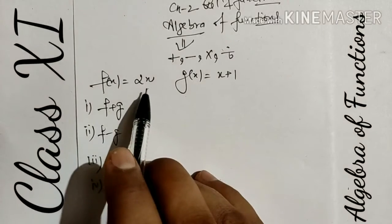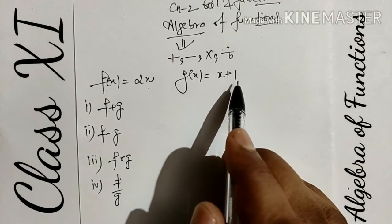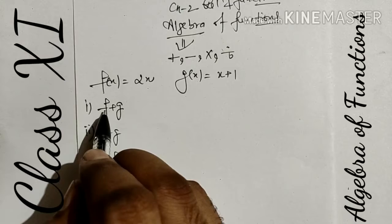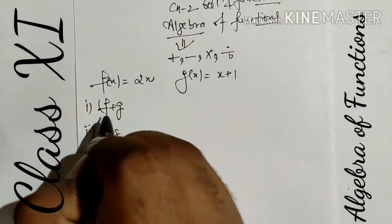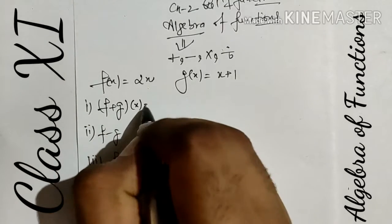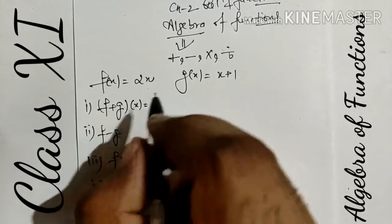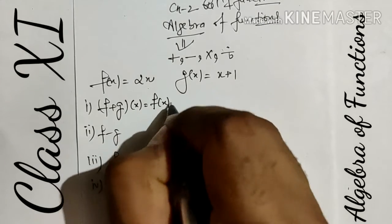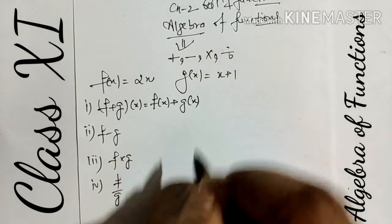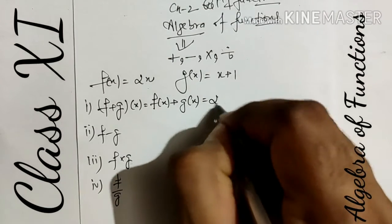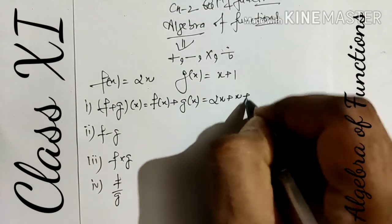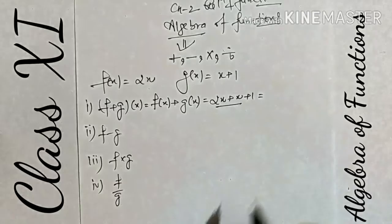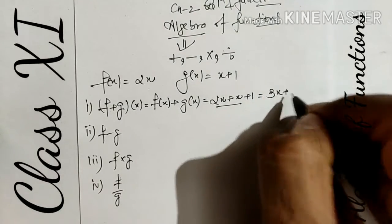One function is f(x) = 2x, and g(x) is given by x+1. Here we have to apply, first of all, f+g. We need a variable so we write f+g of x, which can be written as f(x) + g(x) = 2x + (x+1). These are like terms, so we simplify to get 3x+1.